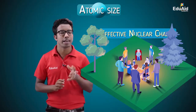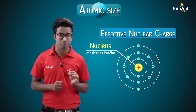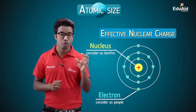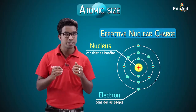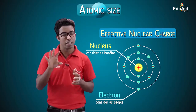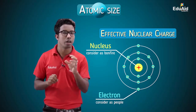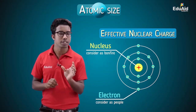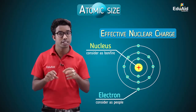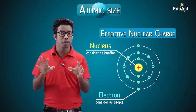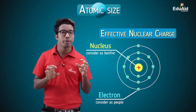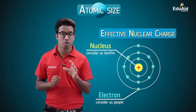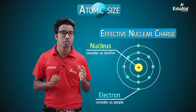The same situation applies to atoms. Consider the nucleus as the bonfire providing positive charge, and the electrons as the people. The amount of positive charge felt by an electron depends on its distance from the nucleus — the larger the distance, the less positive charge is felt. That amount of positive charge felt by an electron is the effective nuclear charge. Nuclear charge is the charge provided by the nucleus, while effective nuclear charge is the charge actually felt by the electrons — and it differs for each electron. When discussing size, the effective nuclear charge of the valence electron — the outermost electron — is considered.